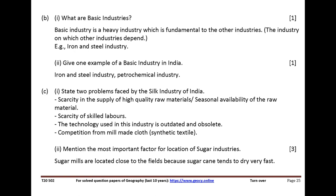What are basic industries? Basic industry is a heavy industry which is fundamental to other industries. E.g., iron and steel industry. Give one example of a basic industry in India: iron and steel industry, petrochemical industry. State two problems faced by the silk industry of India: scarcity in the supply of high quality raw materials, seasonal availability of raw material, scarcity of skilled labor, and outdated technology. Competition from synthetic textile.